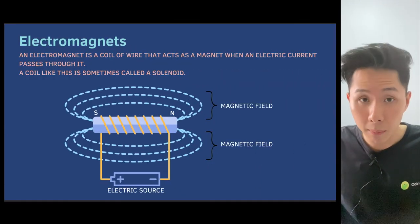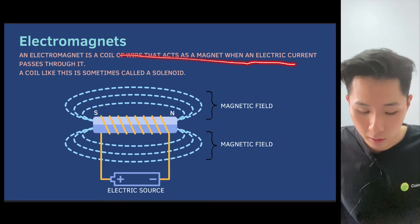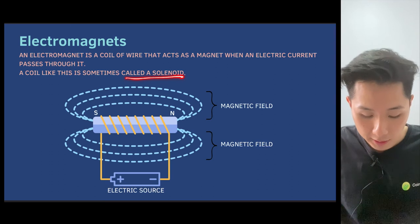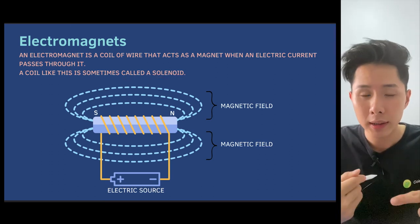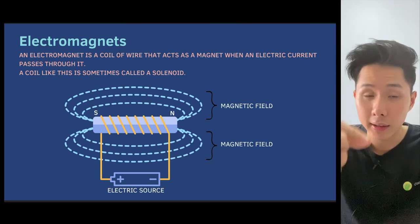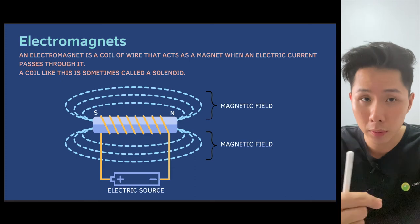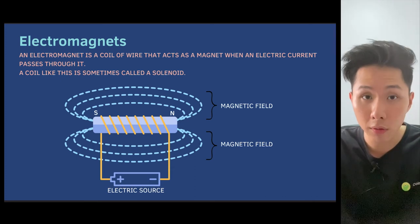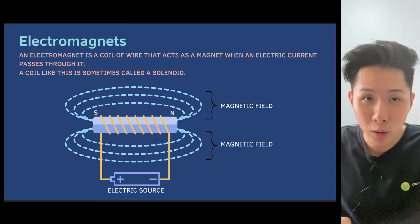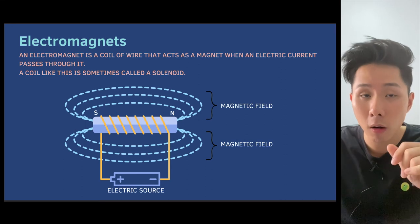Now let's look into one of the interesting topics in magnetism: electromagnets. An electromagnet is a coil of wire that acts as a magnet when an electric current passes through it. We have something called a solenoid, which is basically just a coil of wire. When electricity flows through a coil of wire, it creates a magnetic field around it — a natural phenomenon. The cool thing about electromagnets is that once you switch off the current, the electromagnet loses its magnetic field. In other words, you have created a magnet that can be turned on and off.